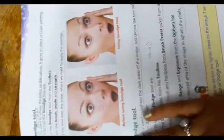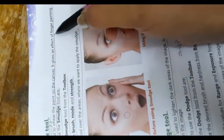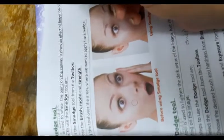Now, answer the following question we have to do in the notebook. Question number 1. Explain the function of a smudge tool and dodge tool. Open page number 51. So, we have to mark from here smudge tool. The smudge tool is used to smear the paint on the canvas. It gives an effect of finger painting.